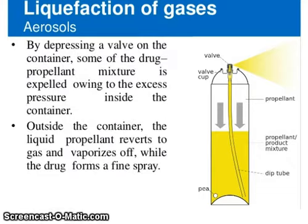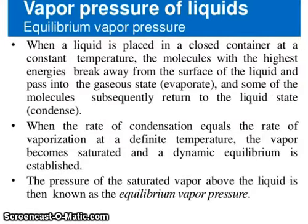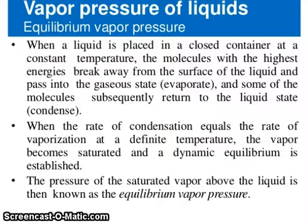By depressing the valve on the container, some of the drug-propellant mixture is expelled owing to the excess pressure inside the container. Outside the container, the liquid propellant reverts to gas and vaporizes off, while the drug forms a fine spray. Regarding vapor pressure of liquid and equilibrium vapor pressure: when a liquid is placed in a closed container at a constant temperature, the molecules with the highest energies break away from the surface of the liquid and pass into the gaseous state — they evaporate.